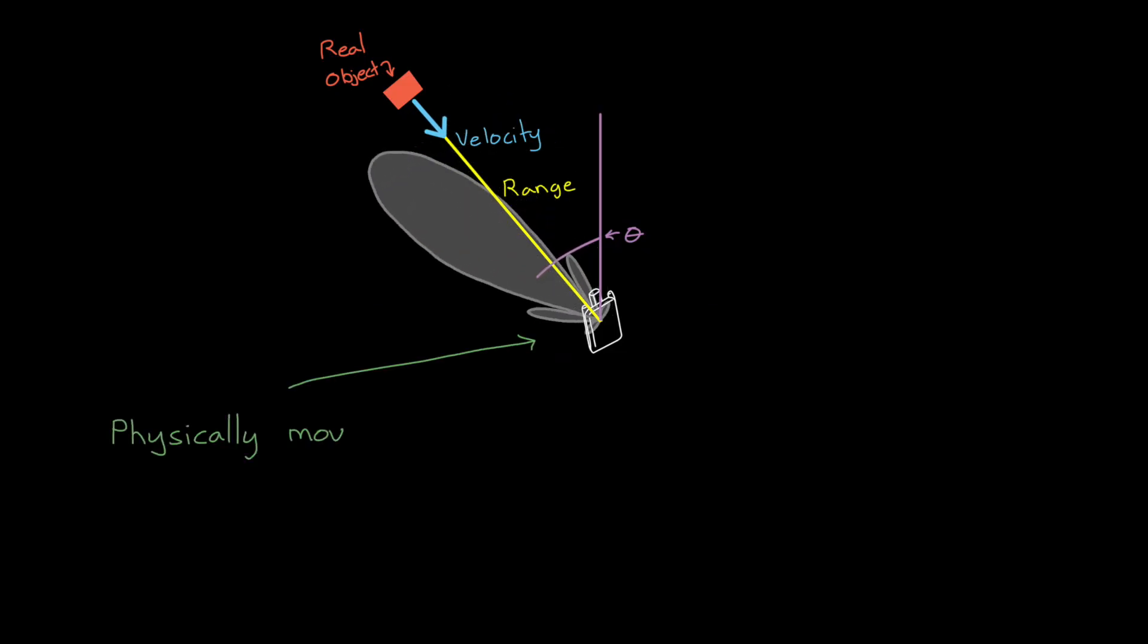And scanning through the environment like this could be done by physically moving the antenna with motors that gimbal in azimuth and elevation, or it could be done with a fixed antenna where you electronically steer the beam by adjusting the gain and phase of the signals to each of the elements in the array. And we're going to talk about phased arrays and beam forming in a future video.